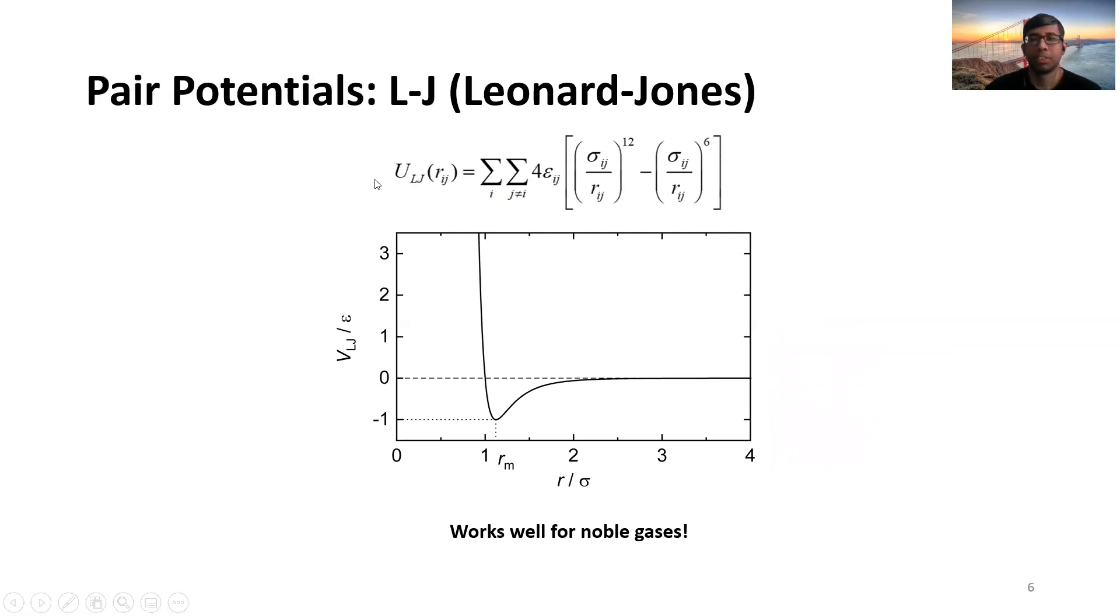In Leonard-Jones potentials it only considers the attraction and repulsion of the atoms when it comes to, let's say, atom i and atom j. That's why it has only attraction and repulsion terms and it only works well for noble gases.